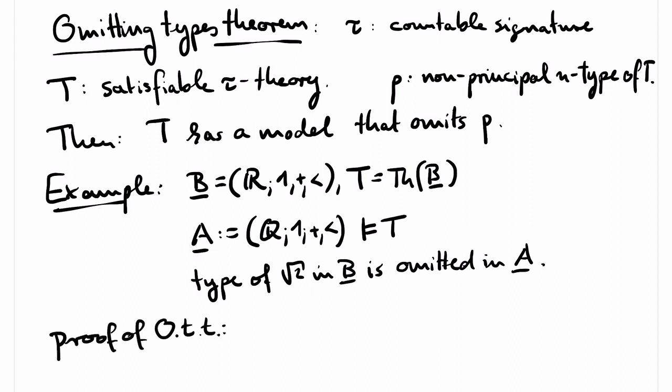To prove the omitting types theorem, we will use the compactness theorem, which is used in almost every proof in model theory. And we also use Tarski's test. Tarski's test is a test whether a given substructure A of a given structure B is in fact an elementary substructure.